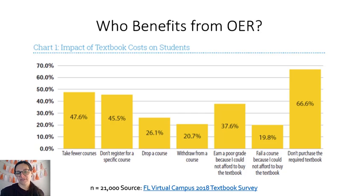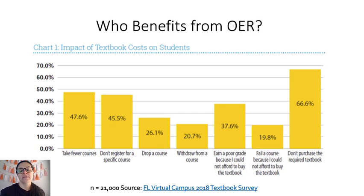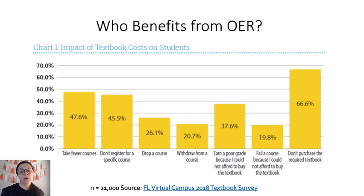Let's talk about who benefits from OER. Here are specific statistics from a study of 21,000 students in Florida who were impacted by the cost of textbooks. It shows that 66.6% don't even purchase the textbook — the majority likely because they can't afford it. It also shows students who take fewer courses, don't register for certain courses, drop or withdraw from courses, or fail courses — all because they cannot afford the textbook. That is a backward system; students can't afford materials so they don't succeed, when we should be doing the opposite to set them up for success.